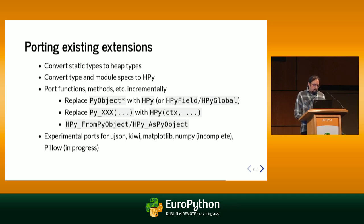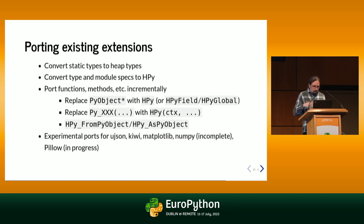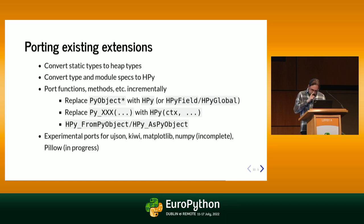To convert existing extensions: the one thing you do staying with CPython is that HPy only supports heap types, so you have to do that first. Then it's a straightforward translation of type specs and module specs to HPy. Then you can do the port function by function or method by method. We've built a few prototypes inside HPy: we have ujson, matplotlib's Kiwi solver, and an attempt at NumPy.